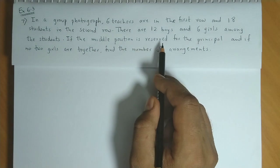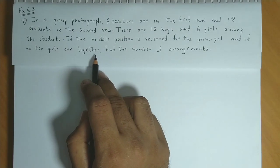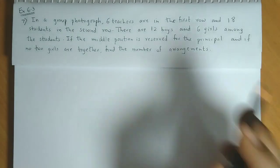If the middle position is reserved for the principal and if no two girls are together, find the number of arrangements.